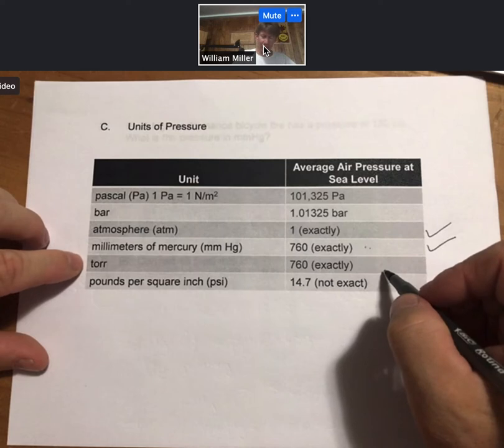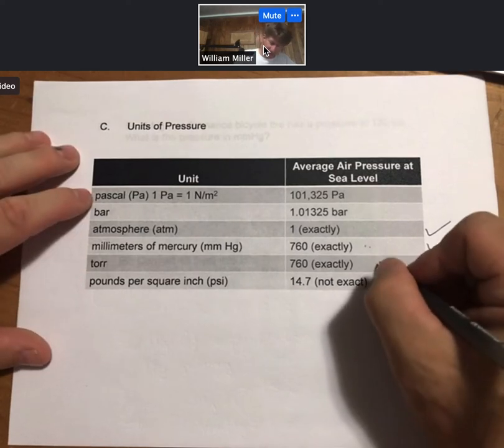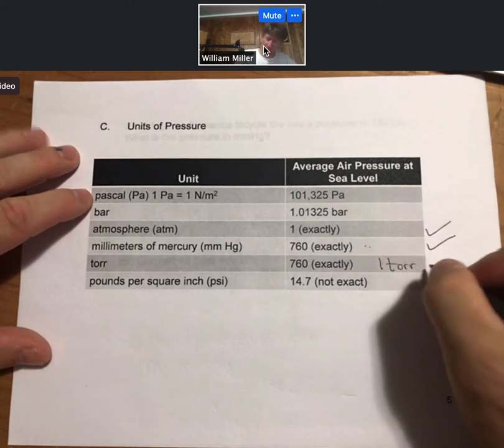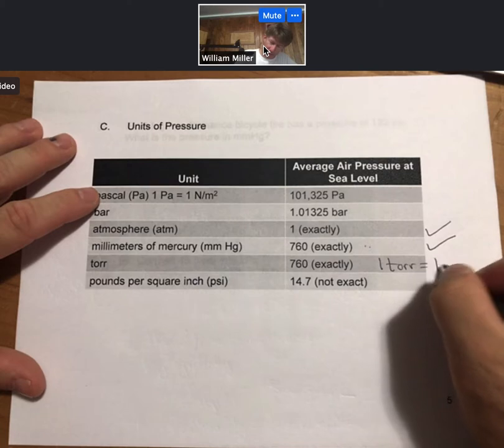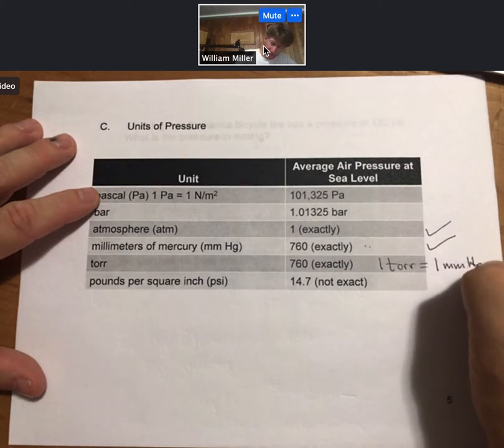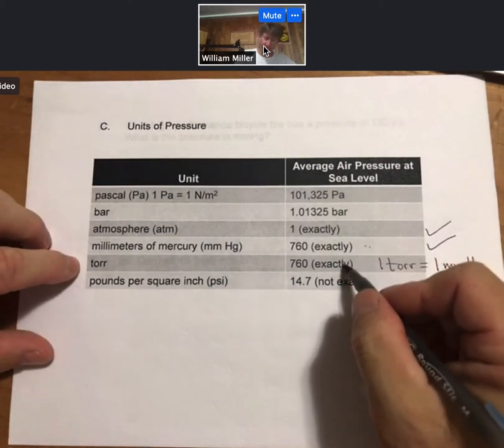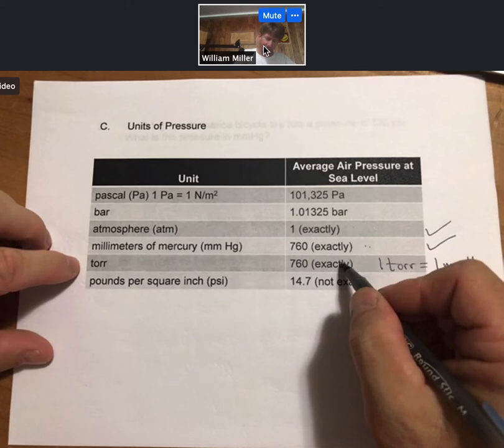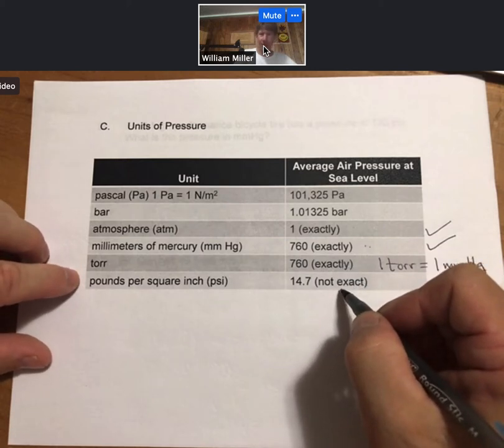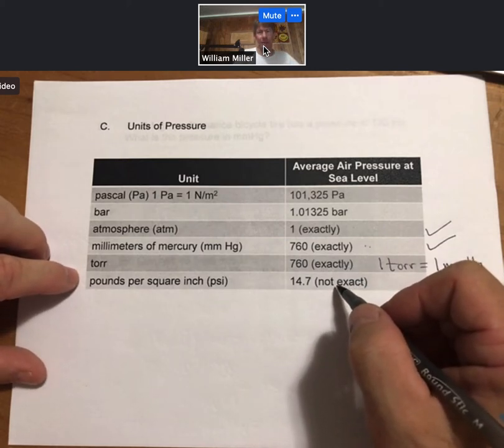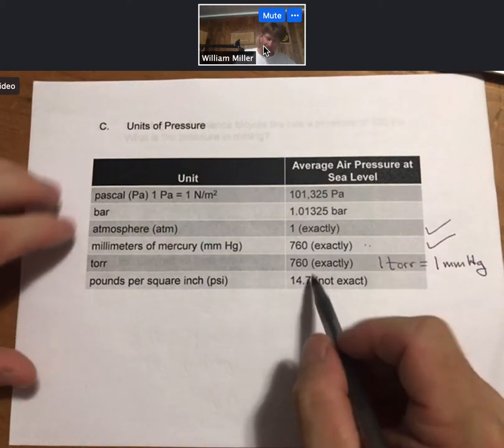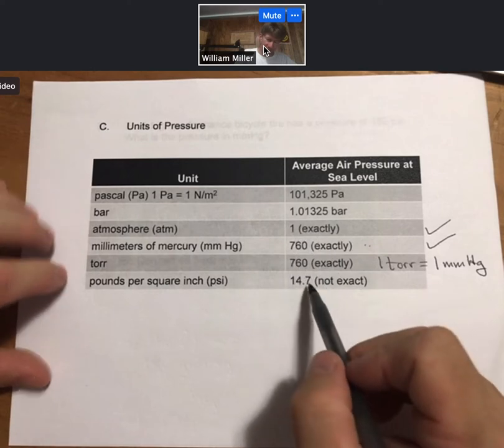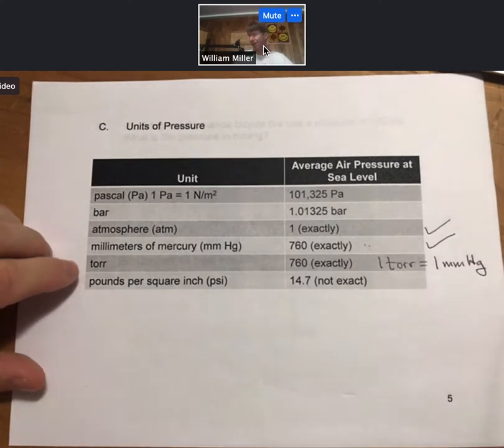You'll also see torr, and the torr is defined as, in honor of Torricelli, one of the first scientists working with gases. One torr equals one millimeter of mercury. That's why these two numbers are the same. Pounds per square inch, we run into that quite often with tires. And I want to point out that one atmosphere is equal to 14.7 pounds per square inch.